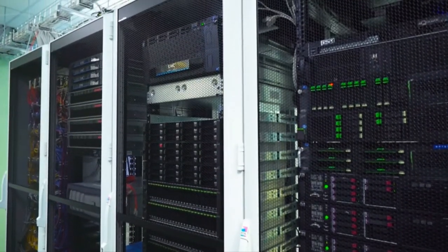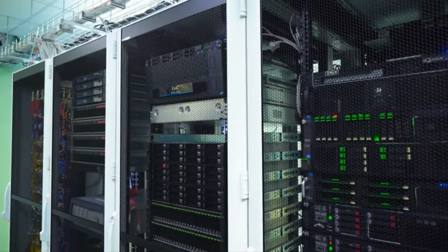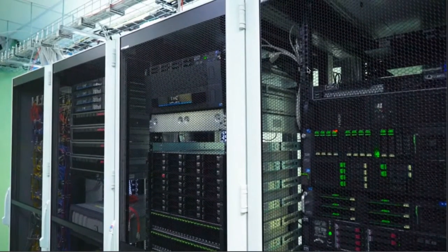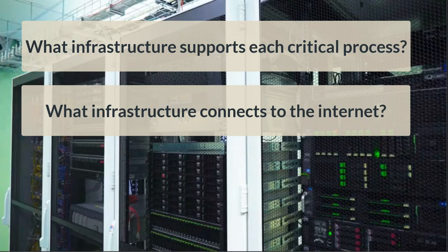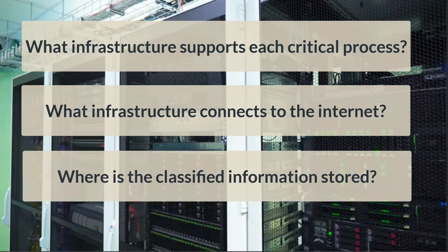The following questions are based on those found in the CISSP CBK reference listed in the bibliography, which is also in the video description. What servers and devices support business-critical functions? Which hosts are accessible via the internet, and therefore at greater risk of compromise? Where are databases and file repositories with classified information? And of course, all of these questions depend on your accurate identification of what business processes are critical.